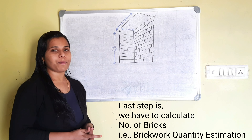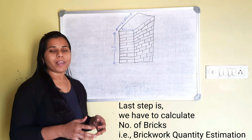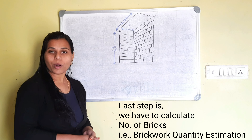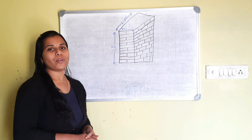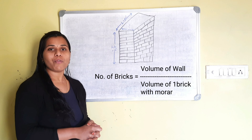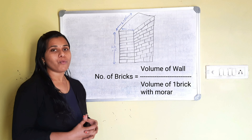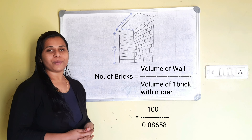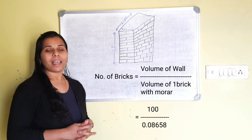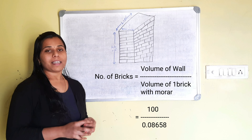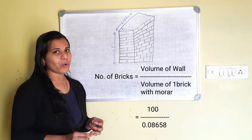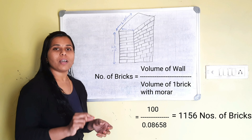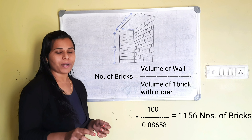The last step is to calculate the number of bricks — that is the brickwork quantity estimation. It is equal to volume of wall divided by volume of one brick with mortar, which is 100 divided by 0.08658, equal to 1156 bricks.